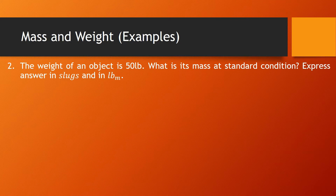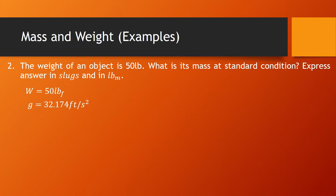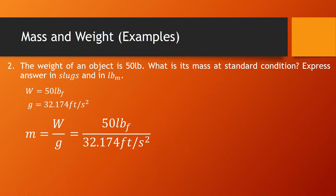Next example: the weight of an object is 50 pounds. What is its mass at standard condition in slugs and in pound-mass? The given is weight = 50 pound-force and g = 32.174 ft/s², since pounds are in English units. Using the formula for mass — that is weight divided by g — we have 50 pound-force divided by 32.174 ft/s².